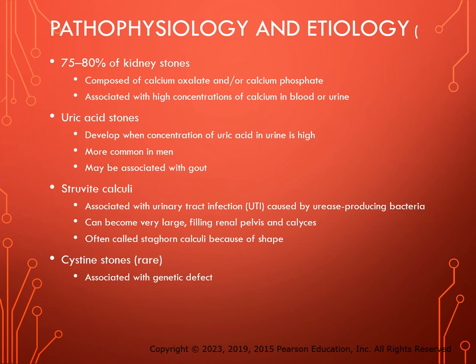Most kidney calculi, 75–80%, are composed of calcium oxalate and/or calcium phosphate, generally associated with high concentrations of calcium in the blood or urine. Uric acid stones develop when urine concentration of uric acid is high; they are more common in men and may be associated with gout. Struvite calculi are associated with UTI caused by urease-producing bacteria such as Proteus; these can become very large and are called staghorn calculi. Cysteine stones, which are rare, are associated with a genetic defect.